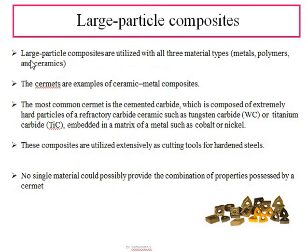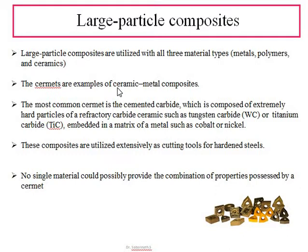Large particle composites utilize all three basic types of materials — metals, polymers, and ceramics. That means we can have combinations of metal with polymers, metal with ceramics, or ceramics with polymers. One basic example is cermets, which is a composite made from ceramic and metal.